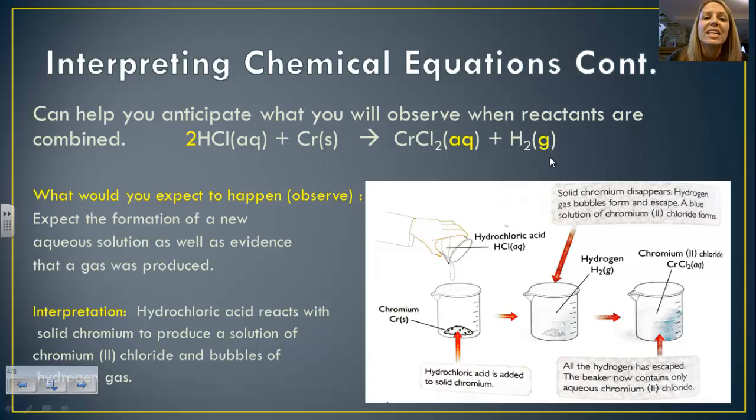The interpretation is putting it into words, what you have observed. If you look at this, hydrochloric acid in an aqueous solution reacts with solid chromium to produce chromium 2 chloride solution and bubbles of hydrogen gas. So again, here's the observations, basically what you should see in your products, and then the interpretation is placing it into words.